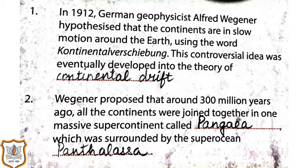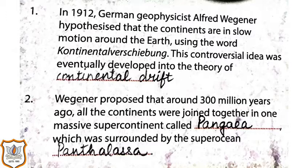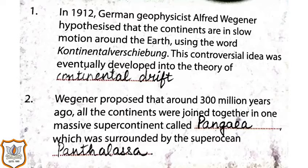First, in 1912, German geophysicist Alfred Wegener hypothesized that the continents are in slow motion around the earth, using the word Continental Verschiebung. This controversial idea was eventually developed into the theory of Continental Drift. Second, Wegener proposed that around 300 million years ago, all the continents were joined together in one massive supercontinent called Pangaea, which was surrounded by the superocean Panthalassa.